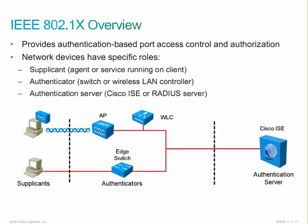802.1X involves basically three parties, and this is on the test: a supplicant, an authenticator, and an authentication server, which in this case is Cisco Identity Services Engine. The supplicant is basically the client device — like your laptop or computer — that wants to connect to the network. The term supplicant is also used interchangeably to reference the actual software running on the client that provides the interface for entering credentials, but in terms of overall architecture, supplicant really just means the endpoint.